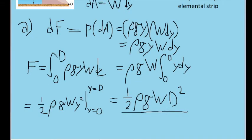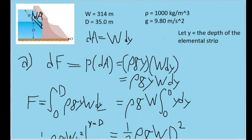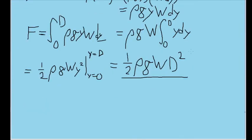All that's left to do is to plug in our values: density of water for ρ, 9.8 meters per second squared for g, 314 meters for W, and 35 meters for D. Doing all of that, we find a value for the force of 1.88 times 10 to the power of 9 newtons.